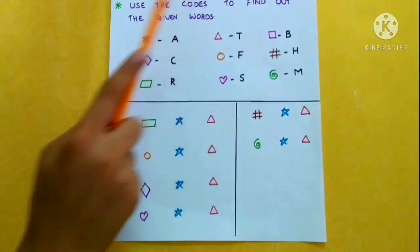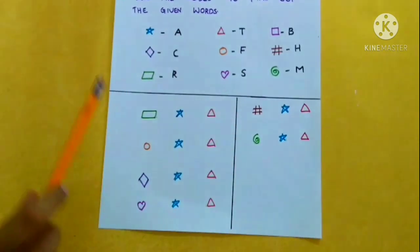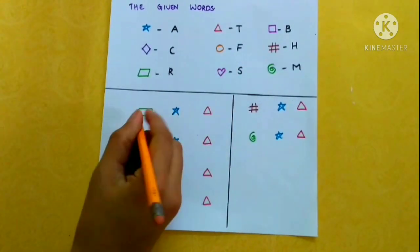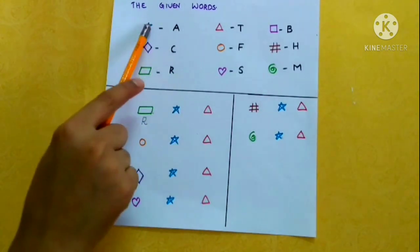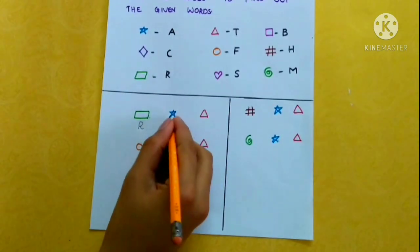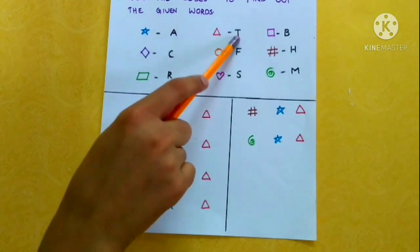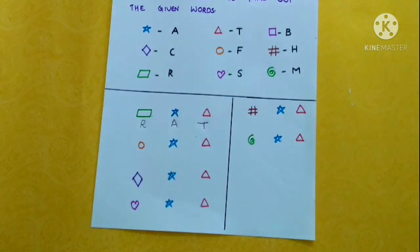Use the codes to find out the given words. These are the given codes. R, A, T. The word is RAT.